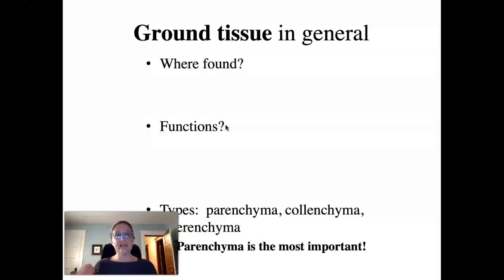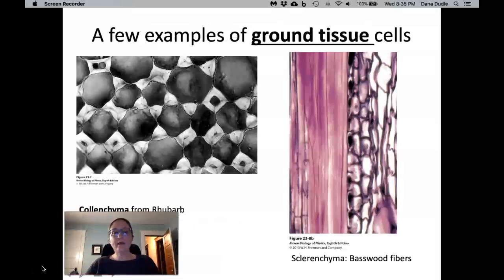And a final function is that some ground tissue has the ability to de-differentiate and become meristematic and actually start growing new cells, which is a cool function that the other tissues are not capable of doing. There are three subtypes of ground tissue, and they have ridiculous botany names: parenchyma, colenchyma, and sclerenchyma. Thankfully, you only need to memorize one of them. Parenchyma is the most important, and you do have to learn that terrible word. Parenchyma is basically the bread and butter of the plant.